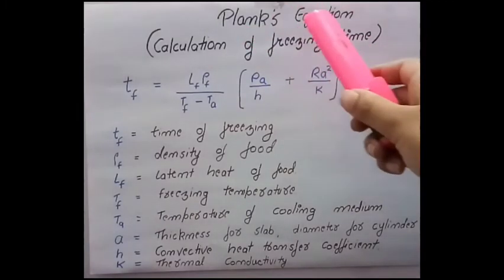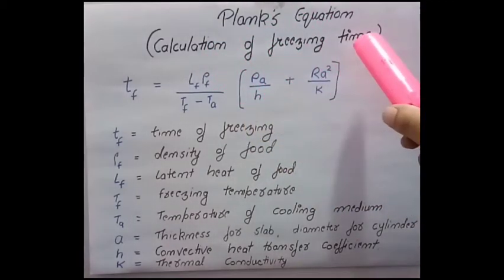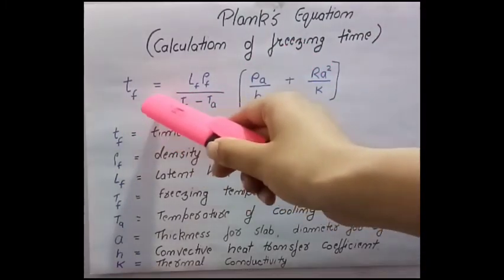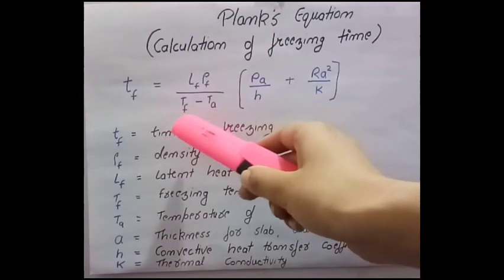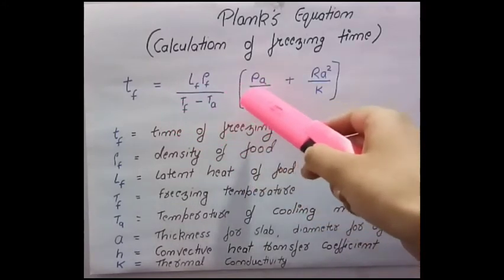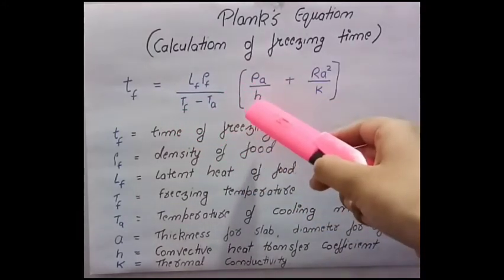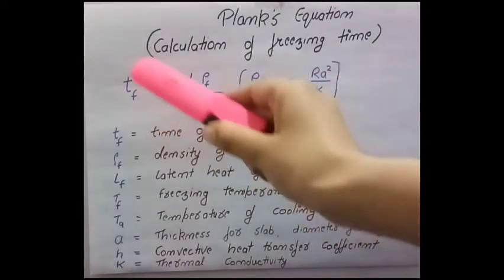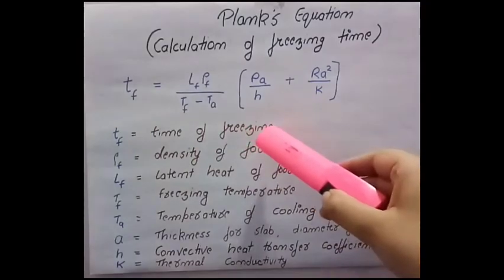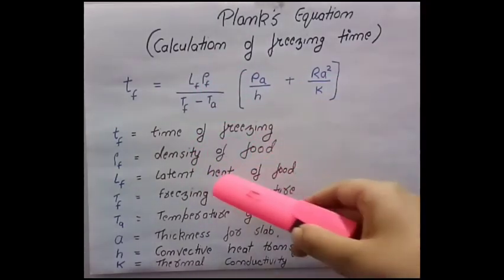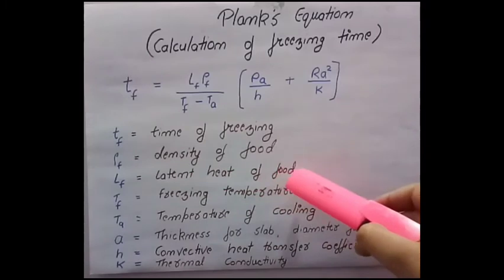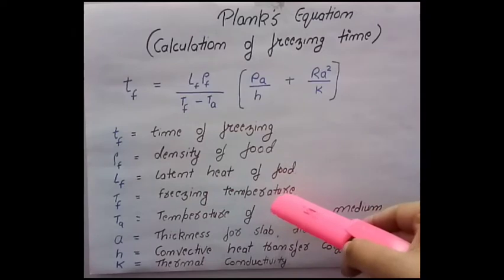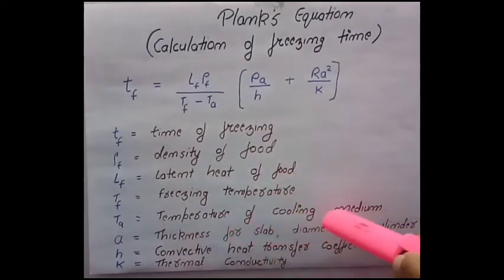Planck's equation is generally used for calculation of freezing time and the formula given as Tf equals to Lf into rho F divided by Tf minus Ta, then Pa upon h plus Ra squared upon K. Tf is time of freezing, rho F is density of food, Lf is latent heat of food, Tf is freezing temperature or freezing point of food, and Ta is temperature of the cooling medium.